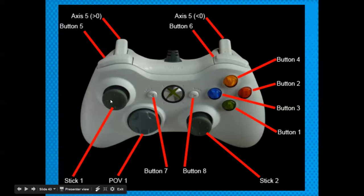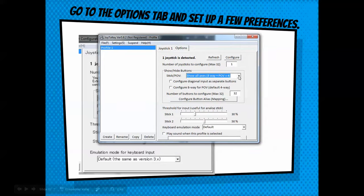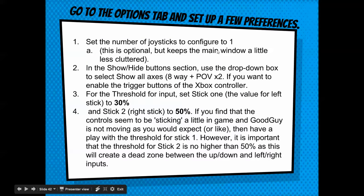Here's stick one, stick two, and the POV. Then you have buttons one through six, and these are the axes. You can set it up to use what you want — this option uses everything. You're going to adjust stick one threshold to 30% and stick two to 50%. If you find that controls seem to be sticking when you're playing and the good guy's not moving as expected, you have to play with the thresholds to get them how you want — some trial and error.